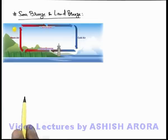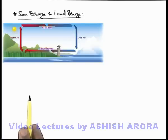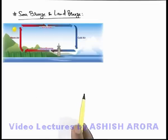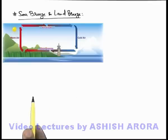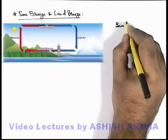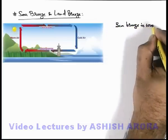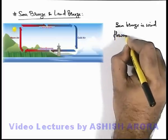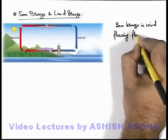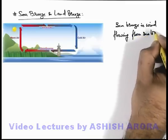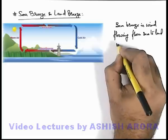Now due to this rise of air above the land, the pressure decreases. And air which is just above the sea level is at high pressure, so it starts flowing from sea level to the land. This flow of air is what we call sea breeze. Sea breeze is wind flowing from sea to land in daytime.